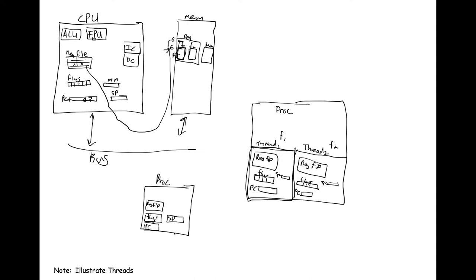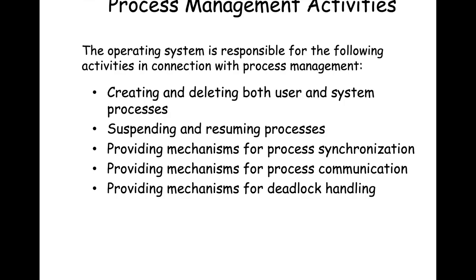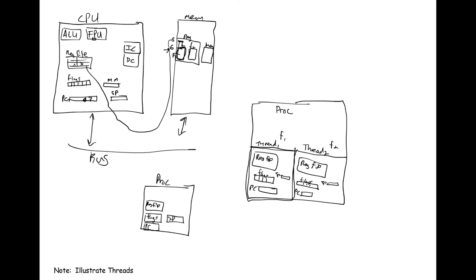Threading is a way of having better concurrency and making more efficient use of your CPU. We'll revisit this in the module on process and thread scheduling. The operating system is responsible for the following activities in process management: creating and deleting user and system processes — bringing them into being means starting execution and associating a data structure that holds all the information needed to represent that process, so that when you switch from one program to the next, you can save away all of the current state.